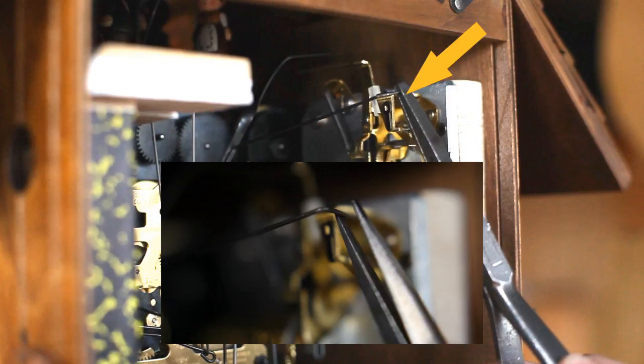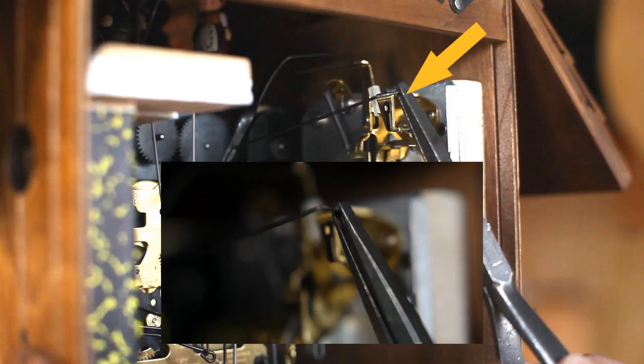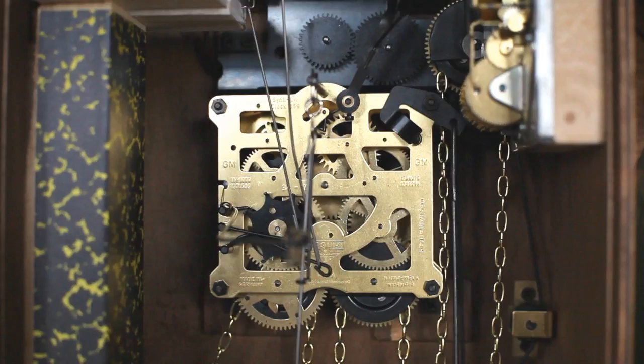The wire should then be bent into a position where it does not touch the fanfly while inactive, but prevents the music box from turning before and while the cuckoo is calling.